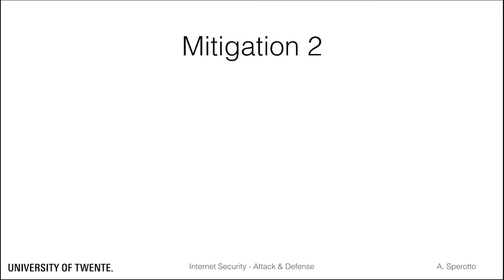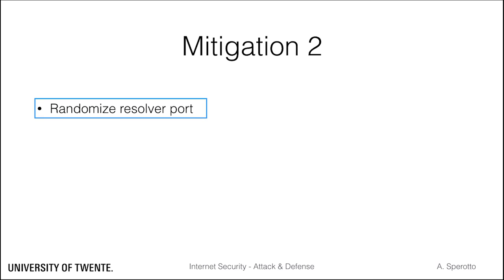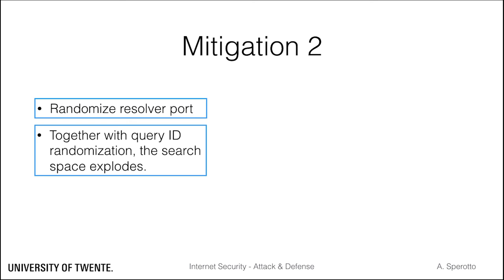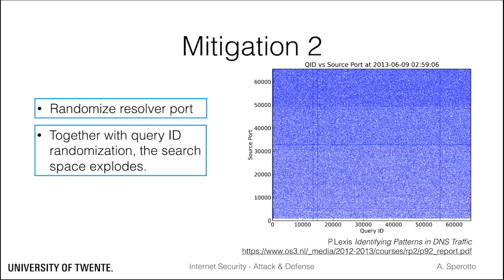A few considerations are important regarding mitigation. As a first response once the attack was discovered, the resolver port was randomized. Together with query ID randomization, this blows up the number of tries an attacker must make to guess both a random query ID and a random port. In theory, this should solve the issue. A study conducted at the University of Amsterdam looked into how query ID and ports are distributed in real DNS traces. The scatter plot, based on data from one of the authoritative name servers in Surfnet, shows a good degree of randomization. However, the picture also shows that some patterns can occasionally emerge, like horizontal or vertical lines or higher density zones, suggesting that the randomization mechanisms can occasionally not be used or there might be less entropy than expected.